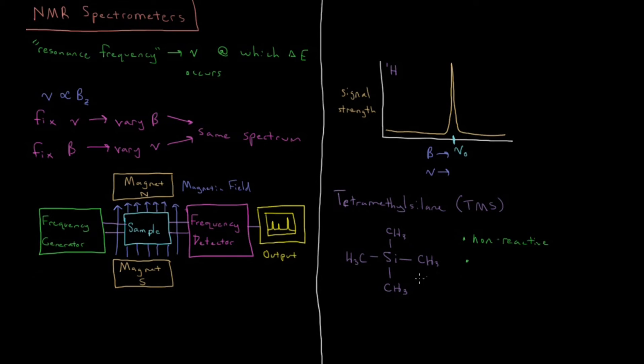There are 12 protons here, so it's going to generate a strong signal. As we'll see, signal strength is proportional to the number of chemically equivalent protons. So having 12 protons which are chemically equivalent gives you a very strong reference signal like that.